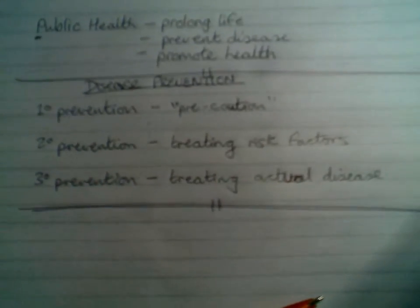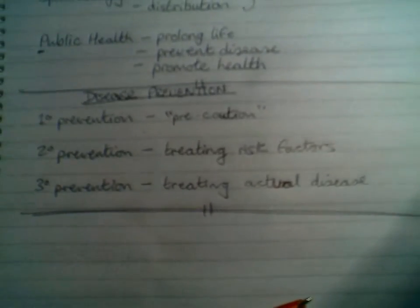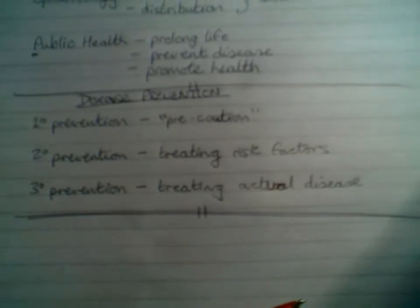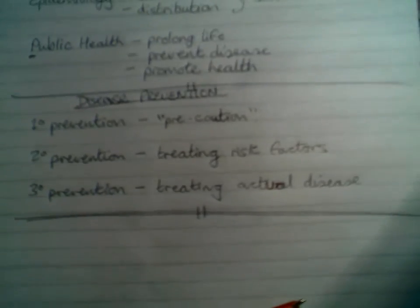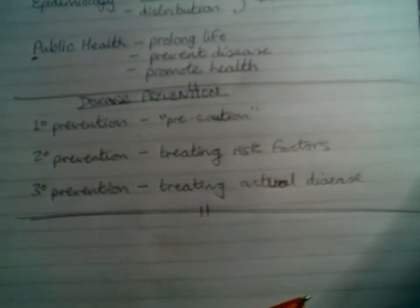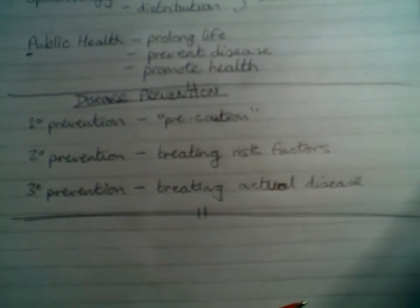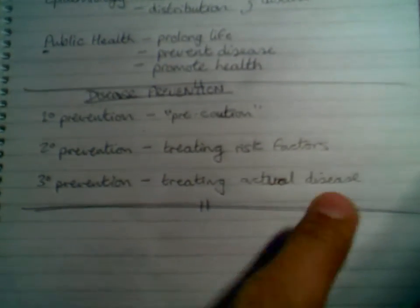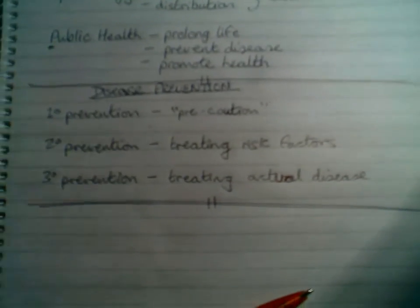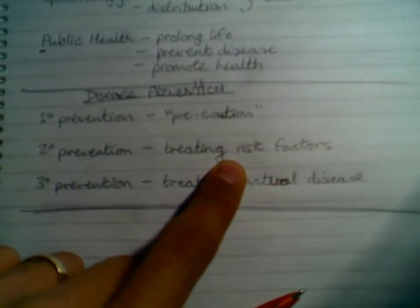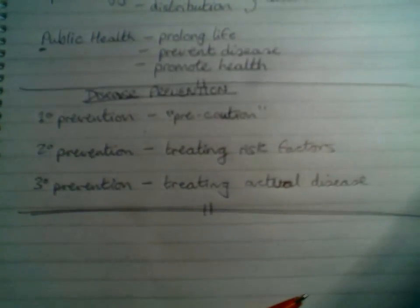Another example of secondary prevention: a patient comes in, we test them, and they have high cholesterol. We choose to put them on statins in the absence of disease — doctors do this quite a lot. The person has no disease, only hyperlipidemia, and we treat them with statins. That's secondary prevention — treating the risk factor, since high blood cholesterol is related to heart disease. If someone comes in with actual heart disease, treating that is tertiary prevention. So: one's precaution, one's treating risk factors, one's treating actual disease.